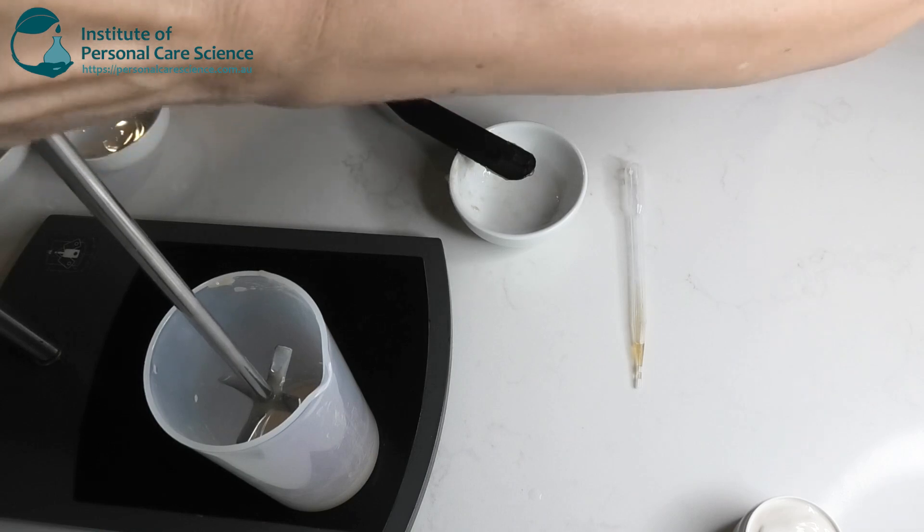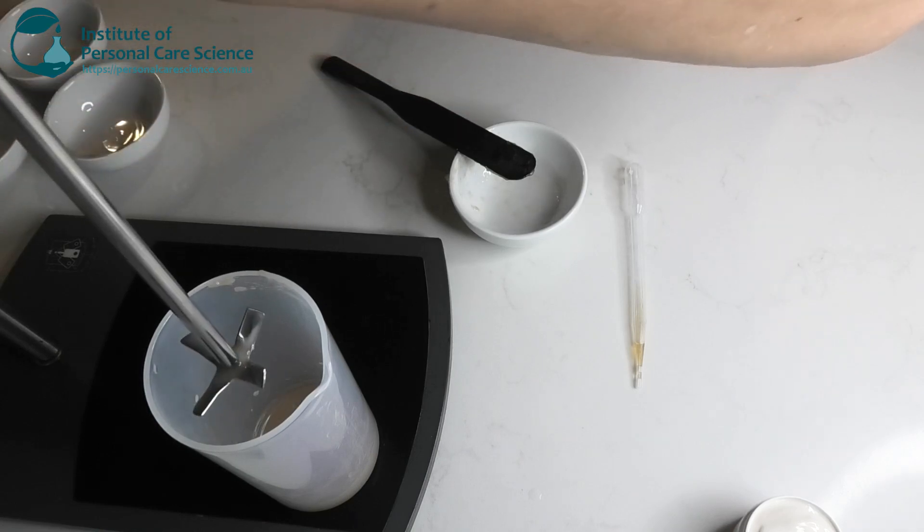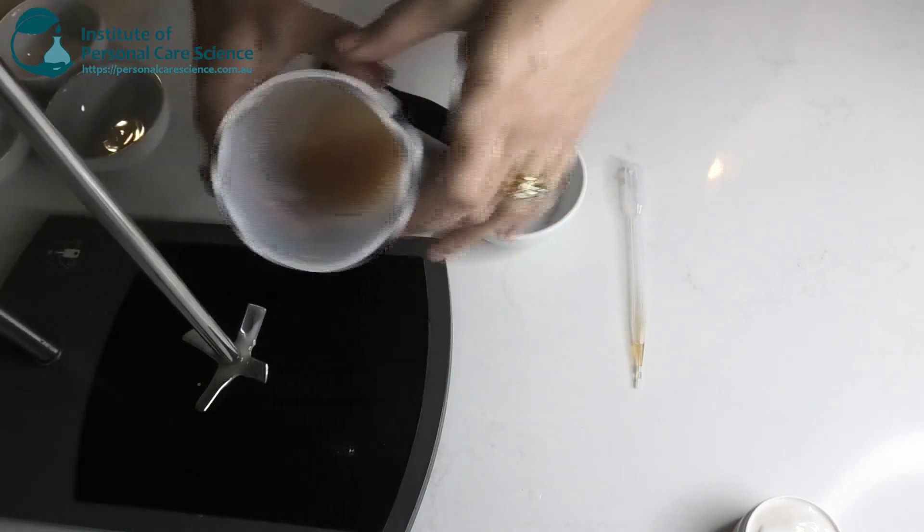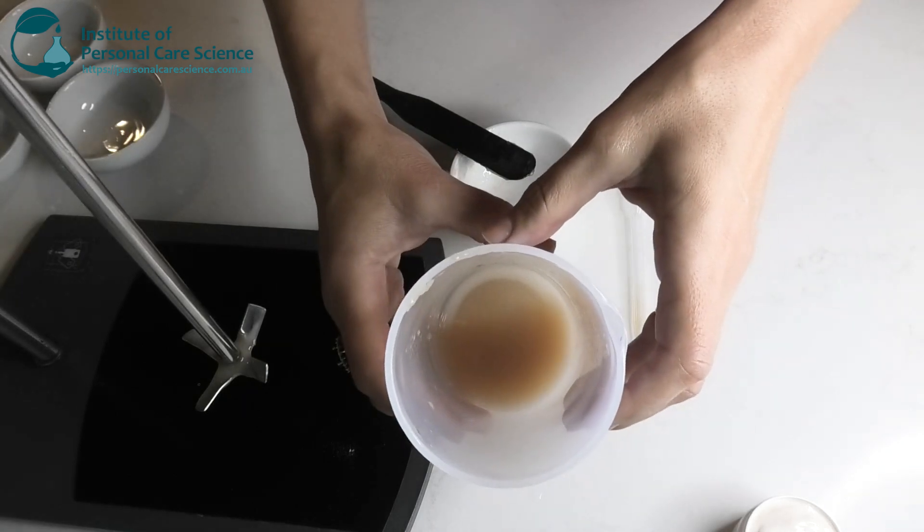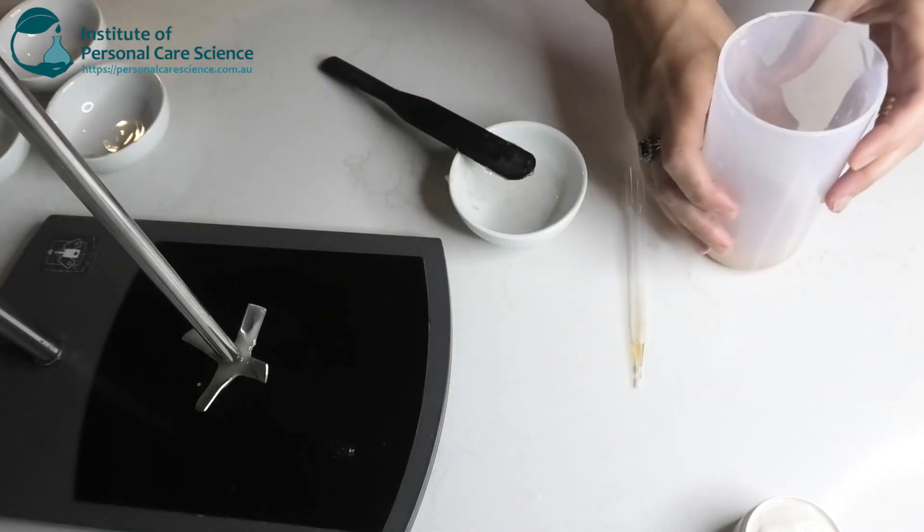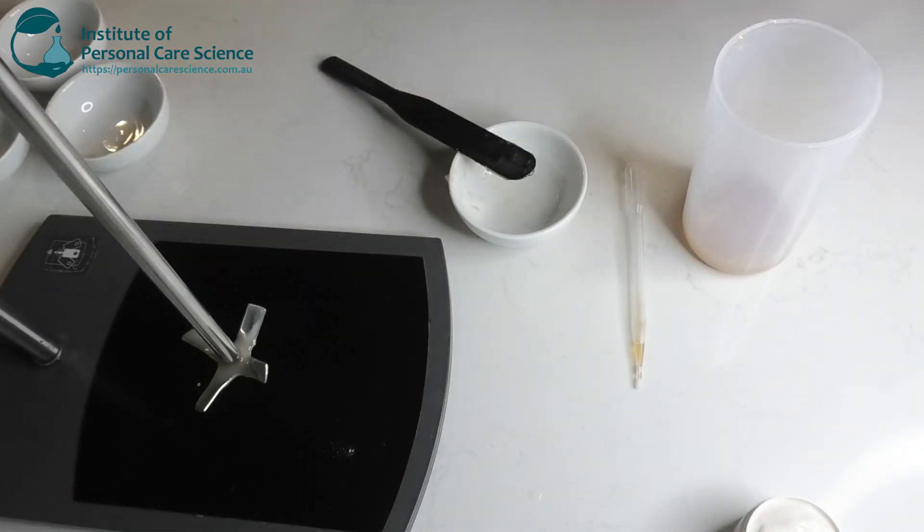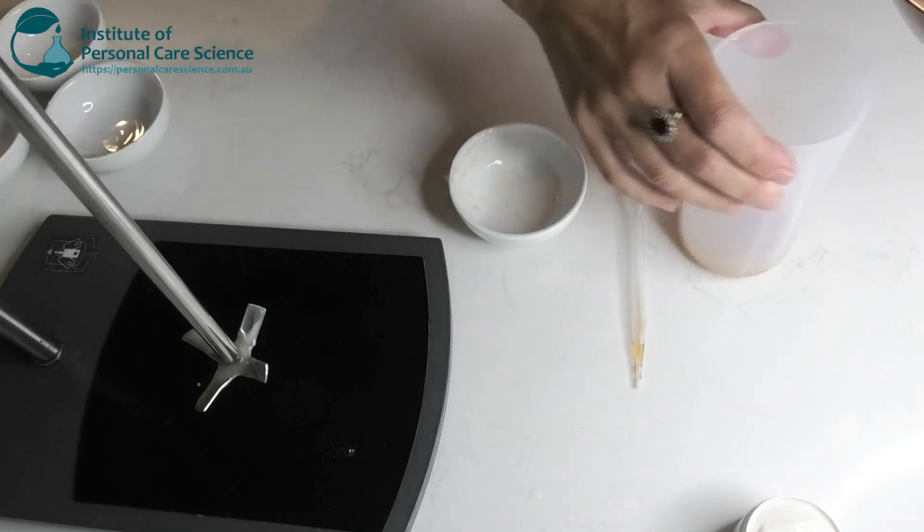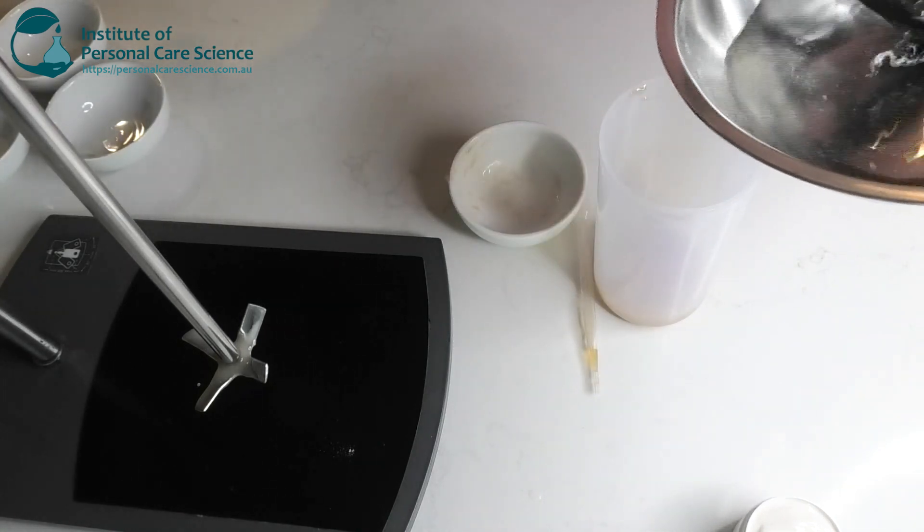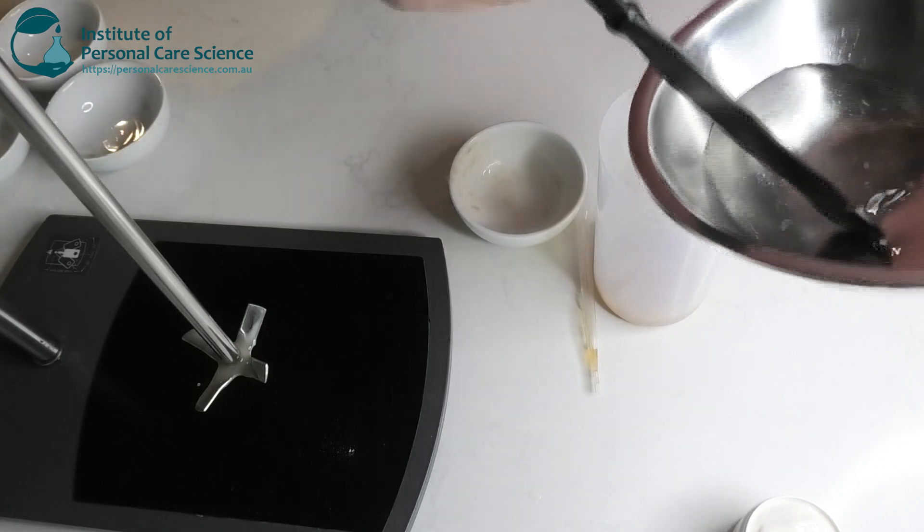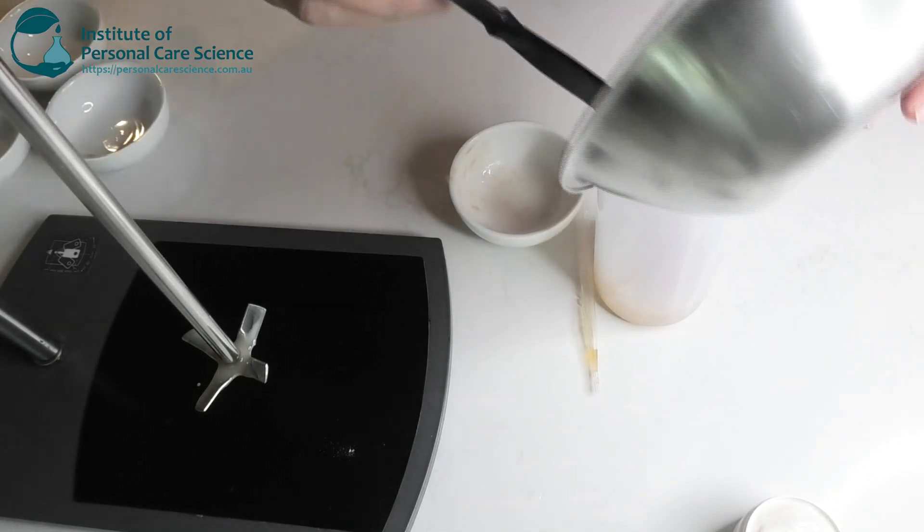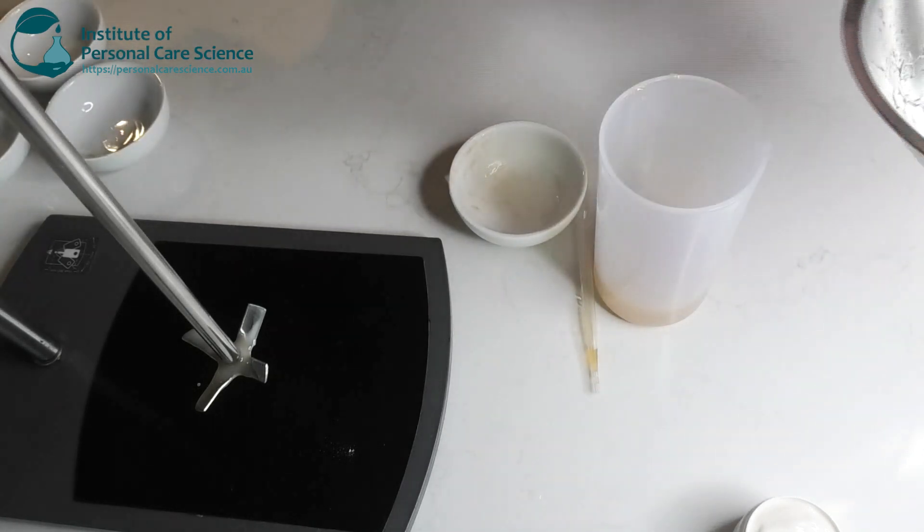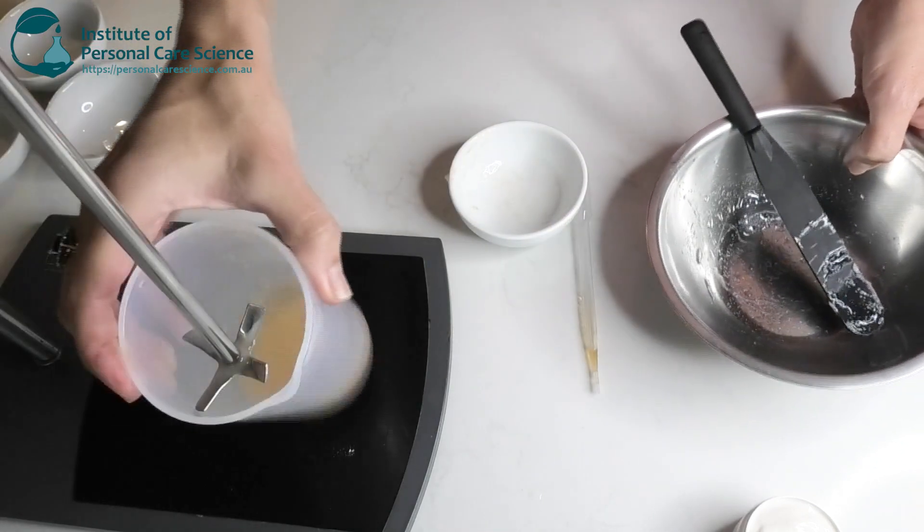So to that, we're going to add the water phase to the Bentone. As you can see, that's beautiful and smooth before we add to the water phase. So this is our pre-mixed water phase. Pop that in. All the actives have dissolved now. And we will propel that.